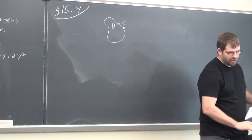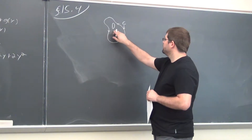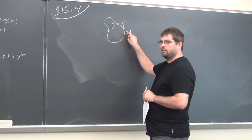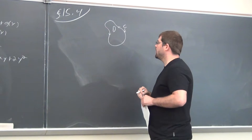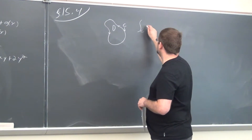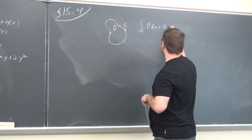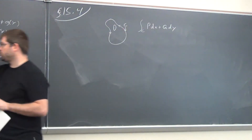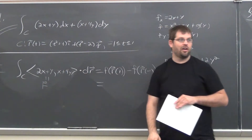Let's recall Green's theorem real quick. If you have a region D bounded by some curve, and we need positive orientation so the curve is going counterclockwise, we have the integral over C in the form P dx plus Q dy. Don't be afraid to realize it also works in the F dot dr form.